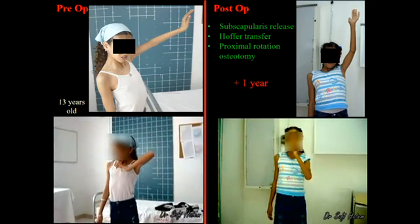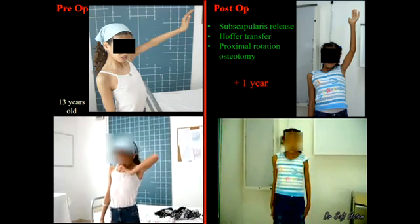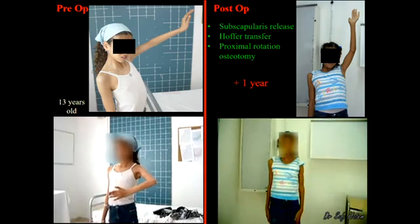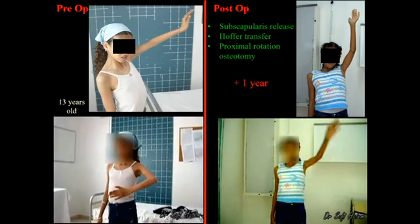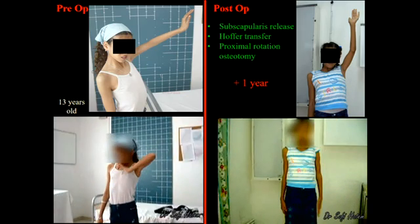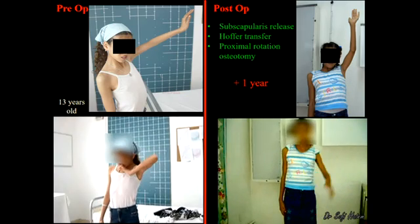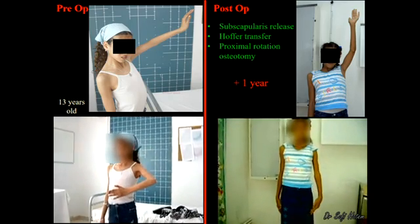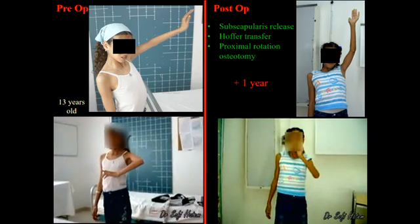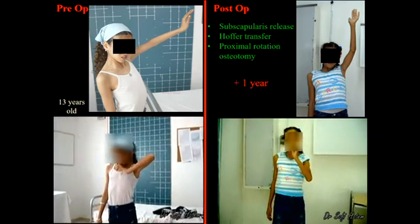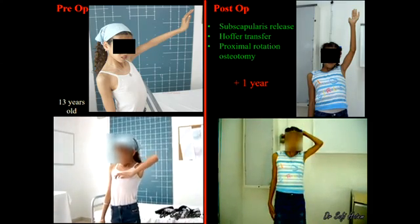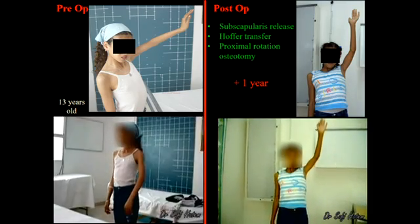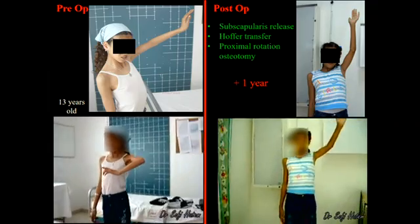The first example is this 13-year-old girl. She had an internal rotation contracture of the shoulder with a limitation of active forward flexion and active adduction. She underwent a subscapularis release, a transfer, and a proximal rotation osteotomy. You see on the right the improvement of the active mobility of the shoulder.